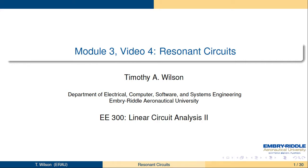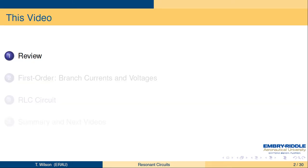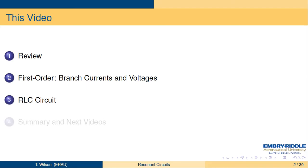This is EE300, Linear Circuit Analysis 2, Module 3, Video 4: Resonant Circuits. We want to review previous material, then look at the first order circuit again from a different perspective examining branch currents and voltages. Then we'll do the series RLC circuit and explore concepts of bandwidth, quality factor, and resonance, followed by a summary and preview.